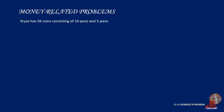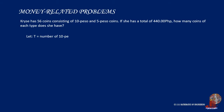Another money-related problem: Chris has 56 coins consisting of 10-peso and 5-peso coins. If she has a total of 440 pesos, how many coins of each type does she have? We denote T as the number of 10-peso coins and F as the number of 5-peso coins. The total number of coins gives us T plus F is equal to 56. By extracting variable F, we transpose T to get F is equal to 56 minus T. Take this as equation 1.